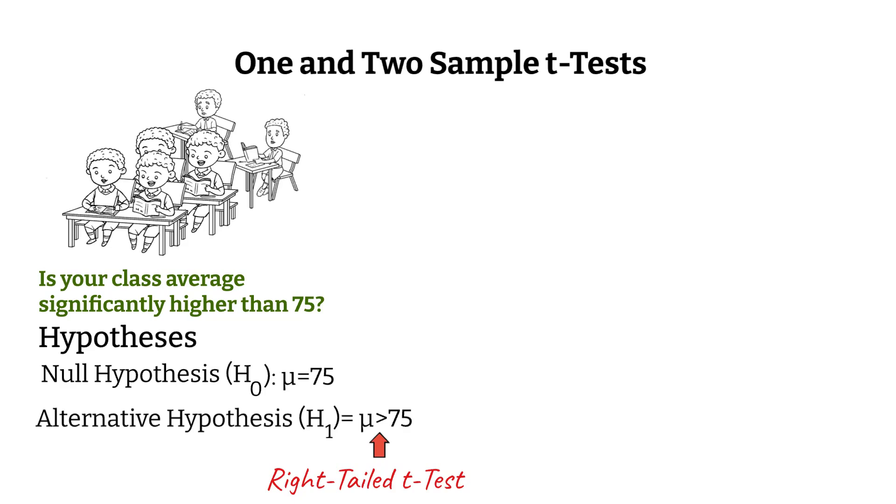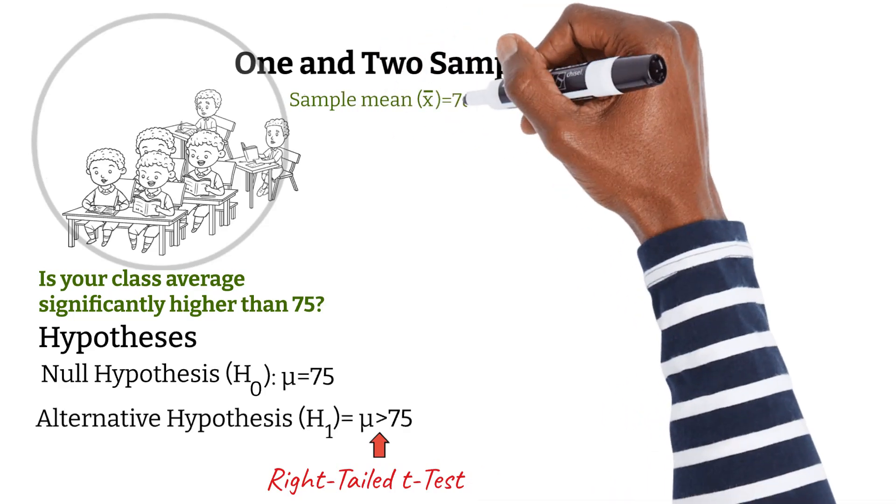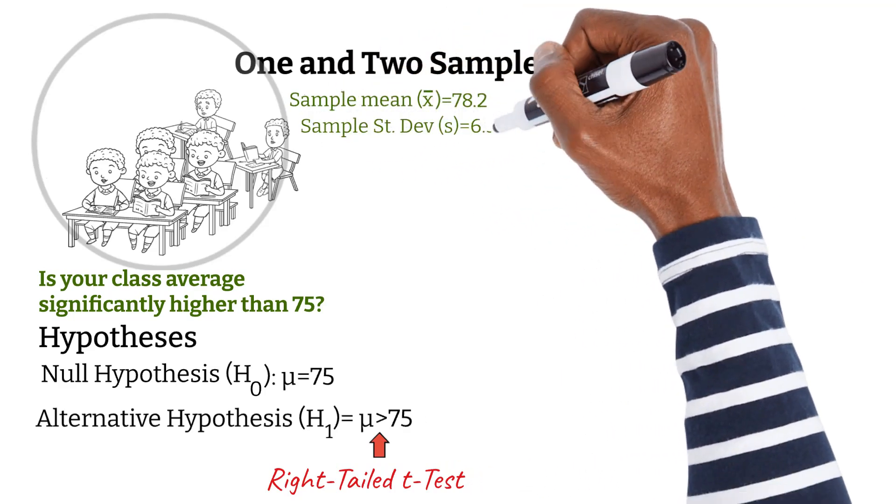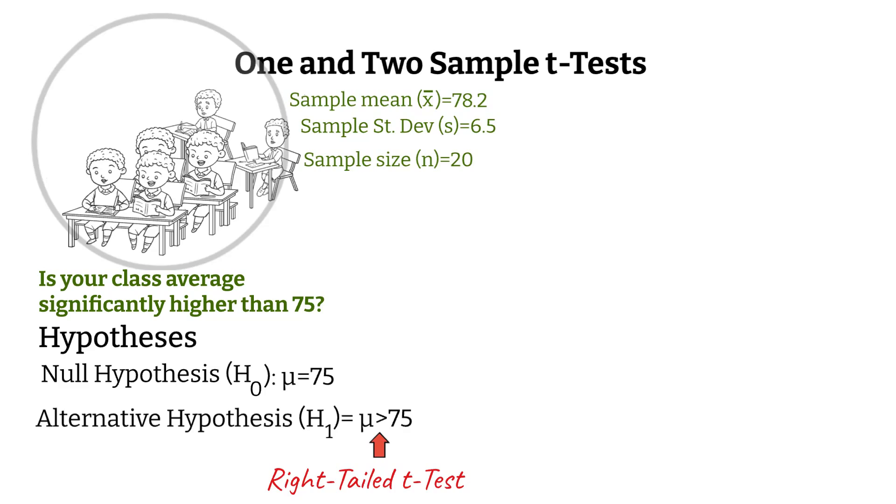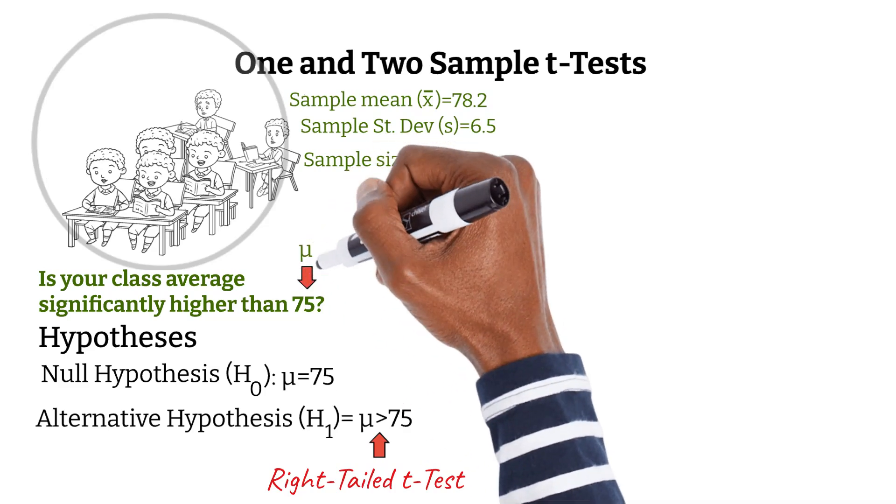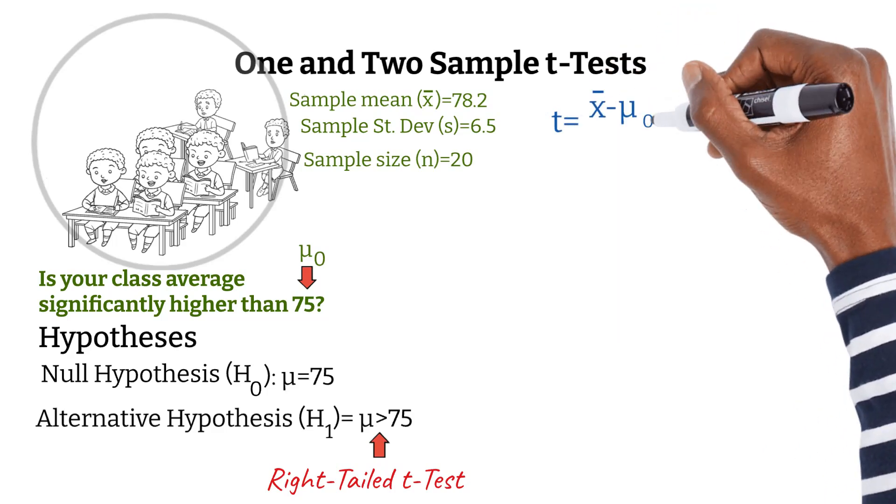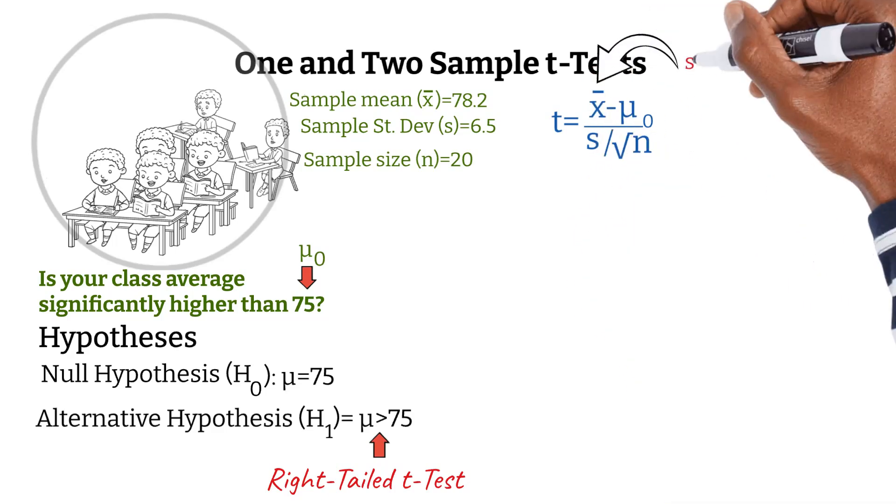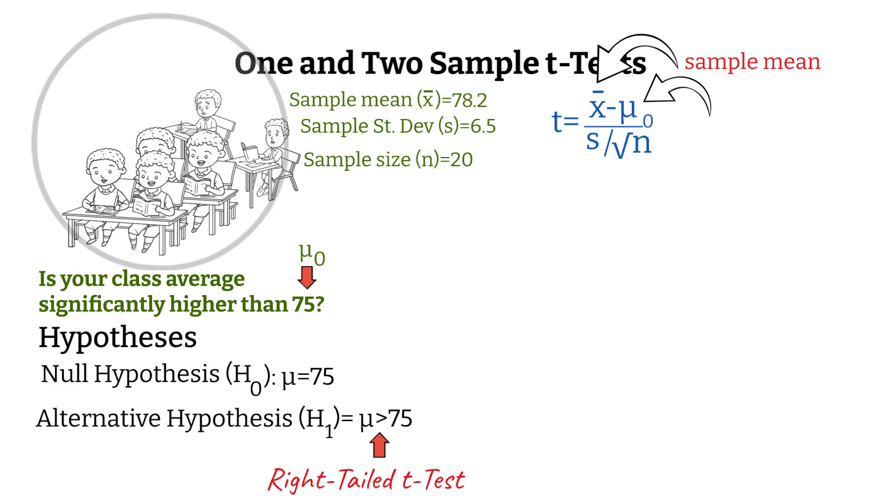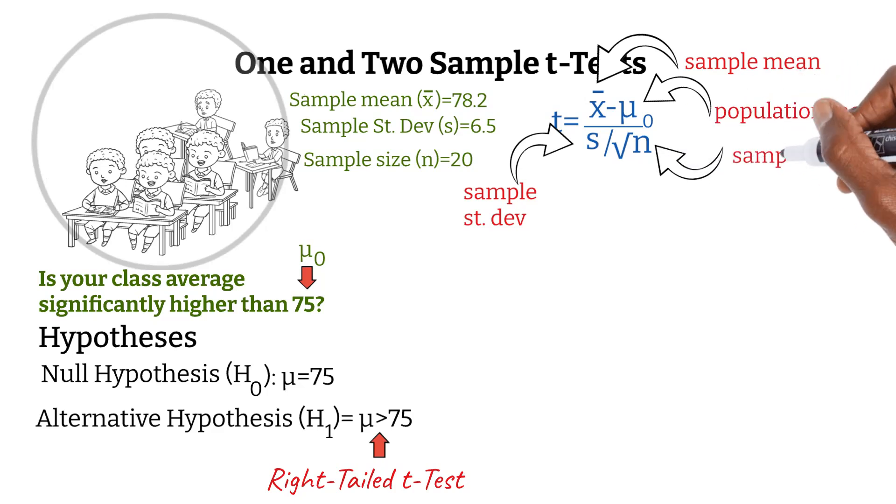Now, let's move on to calculating the t-test statistic. The sample mean is 78.2. The sample standard deviation is 6.5. The sample size is n. Just imagine there are 20 students in that circle. And the hypothesized population mean in the question is 75. To calculate the t-value, we use this formula. t equals x-bar minus mu sub-zero over s divided by the square root of n, where x-bar is the sample mean, mu sub-zero is the hypothesized population mean, s is the sample standard deviation, and n is the sample size.